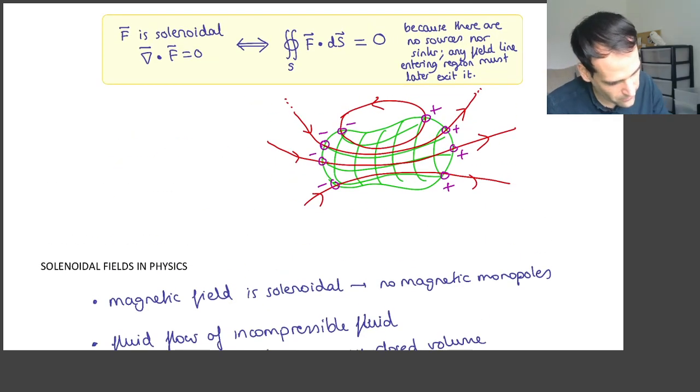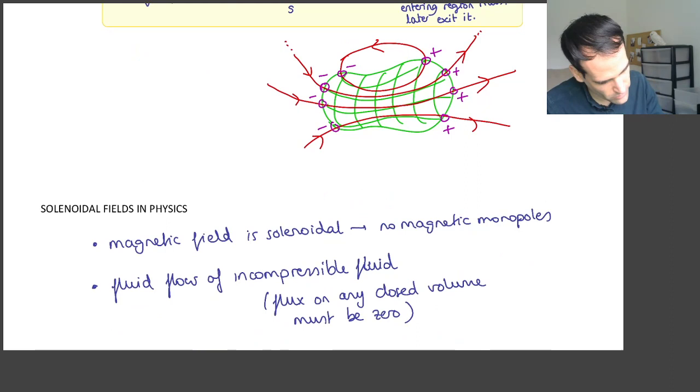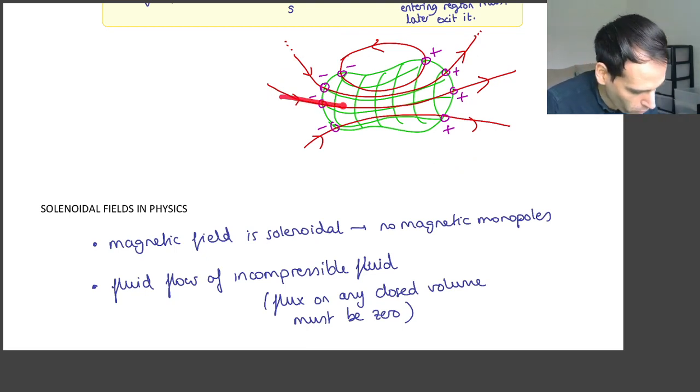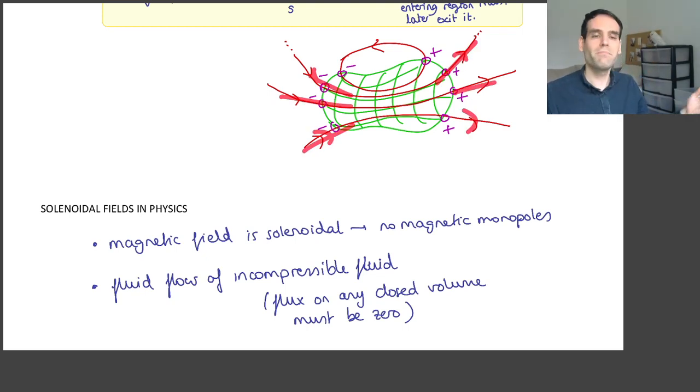Isn't this nice? So if you find a closed volume like this one, and now let's imagine that the field lines are not the magnetic field, but now they are the flow of water. So if the water is not compressible, you cannot have more water flowing into the volume than flowing out. That would be impossible.